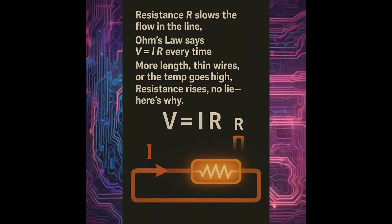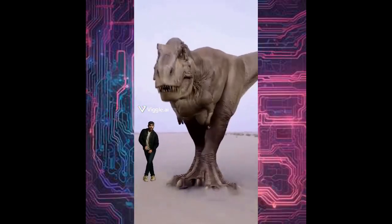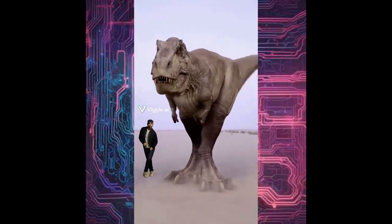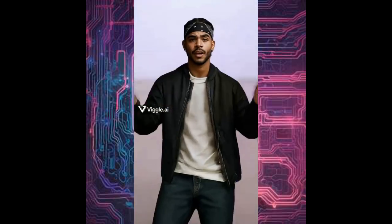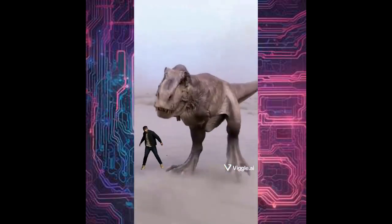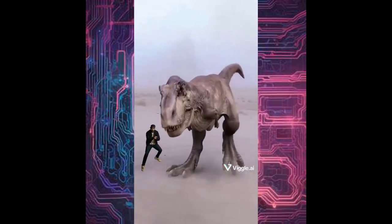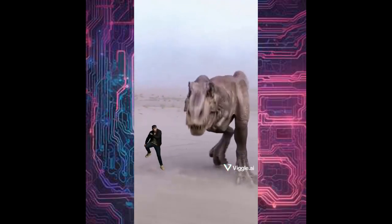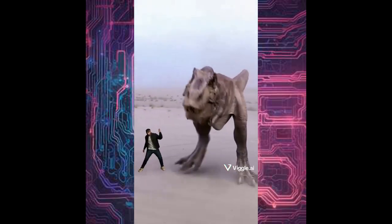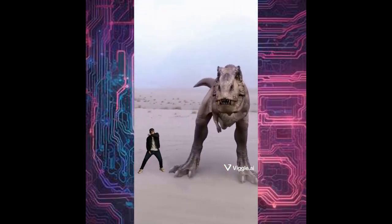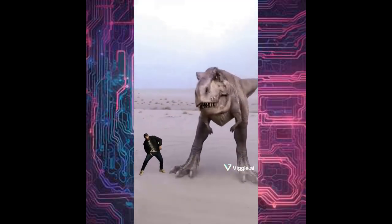Resistance, R slows the flow in the line, ohm's law: V equals IR every time. More length in wires, resistance goes high, resistance rises, no lie, here's why. Power brings heat — P equals IV, or I squared R. Plug this into E, P equals power, that's how we build electricity.